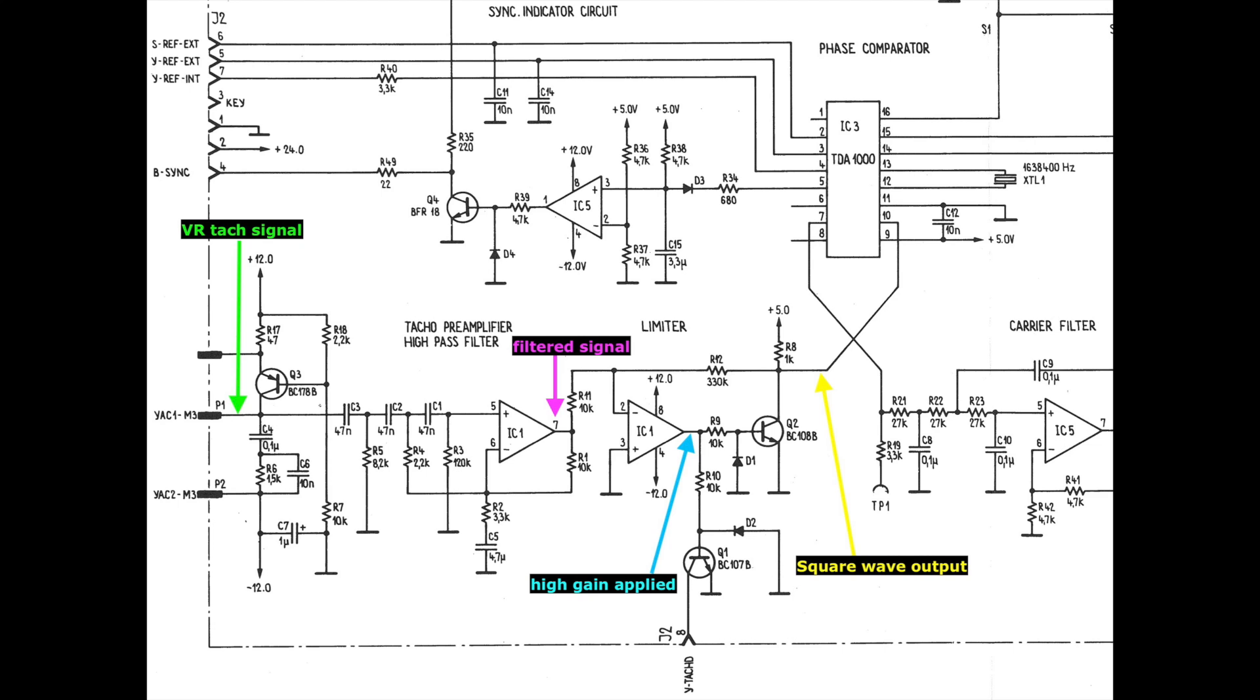This circuit is designed for a regulated dual rail supply of plus and minus 12 volts and a single 5 volt rail.